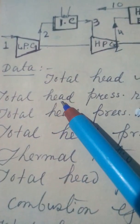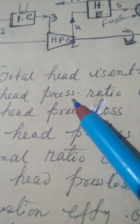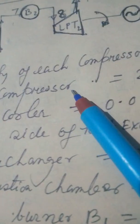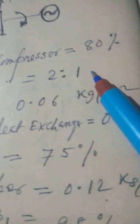Total head pressure ratio of each compressor is equal to 2 to 1.